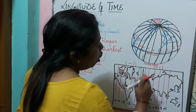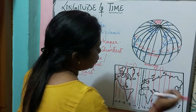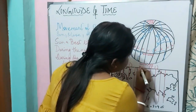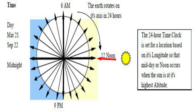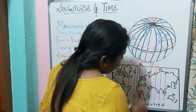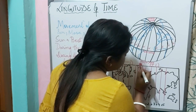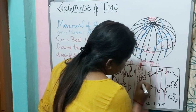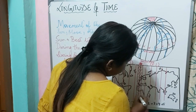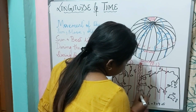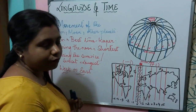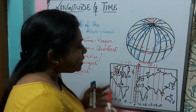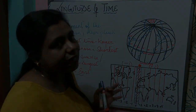The prime meridian is at zero degree. I told you this is a reference point taken so that we can find or locate all other longitudes. When the prime meridian has the Sun at the highest point in the sky, all the places located along that meridian will have the same time.